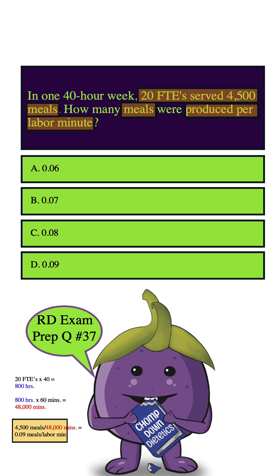Then, we just got to take the number of meals, which is 4,500, and we got to divide it by the total minutes, which is 48,000, and that'll get us 0.09.